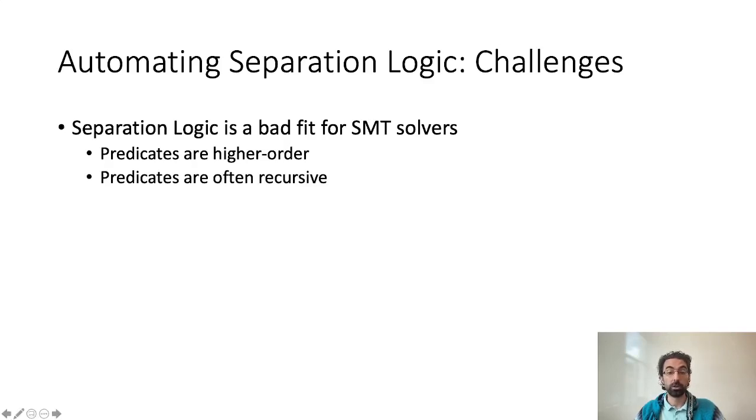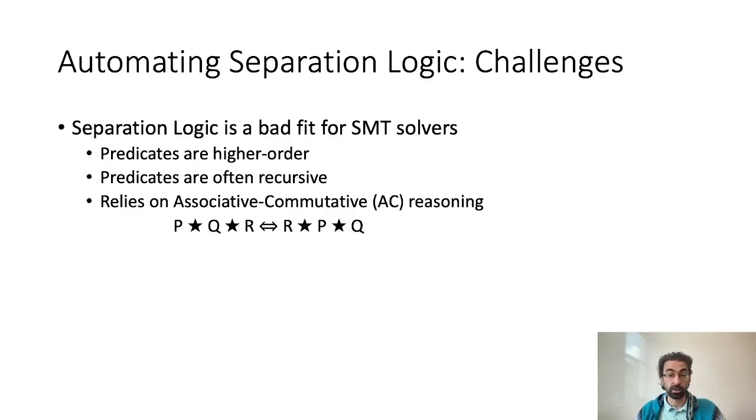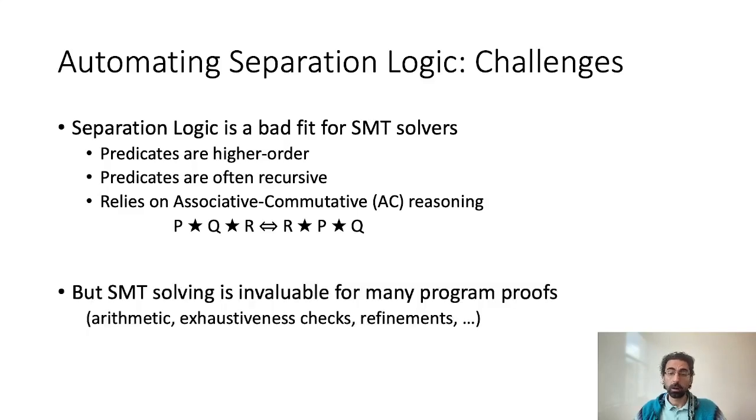Second, many separation logic predicates are recursive, for instance predicates modeling data structures like lists or trees that need to be packed and unpacked during verification. Lastly, and perhaps more importantly, the separation logic star is associative and commutative. As such, reasoning heavily relies on AC rewritings, for instance to prove that P star Q star R is equivalent to R star P star Q, which is something that SMT solvers struggle with.